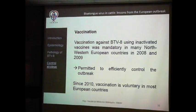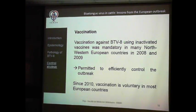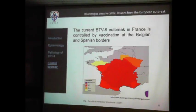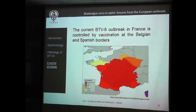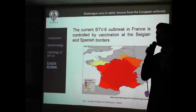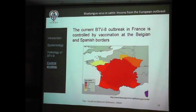Since 2010, vaccination has been only voluntary — depending on the willingness of farmers in most countries. So far it has prevented reemergence of the virus. But in 2015 we had a new outbreak in France, emerging in the central area. We believe it is due to persistence in wildlife — probably red deer — which maintained the virus in that area for years before it came back to domestic ruminants.